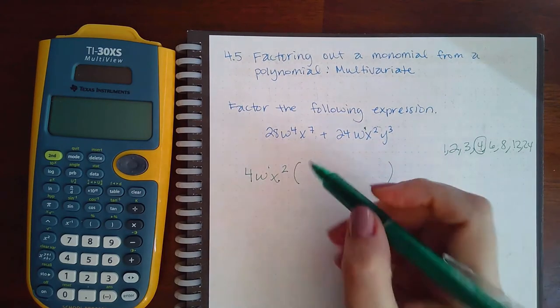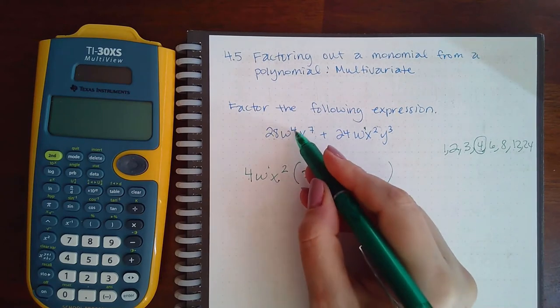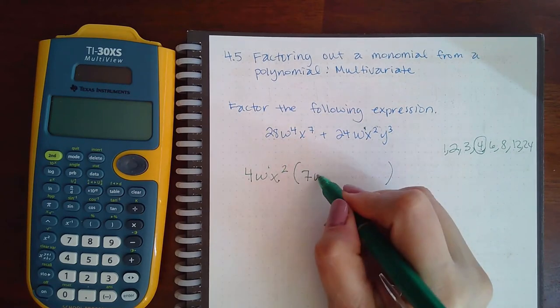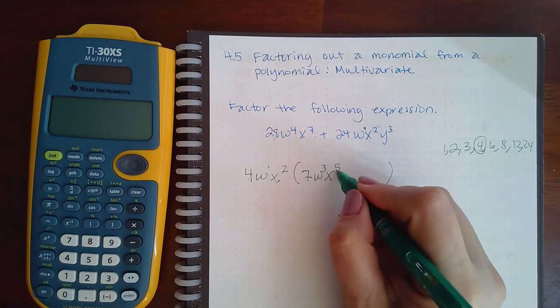Now if I take that out, 28 divided by 4 is 7. W to the 4, if I took one out, I'm going to have W cubed. X to the 7, if I took two out, I'm going to have X to the 5th.